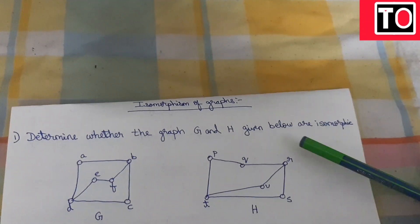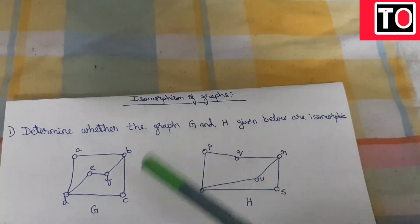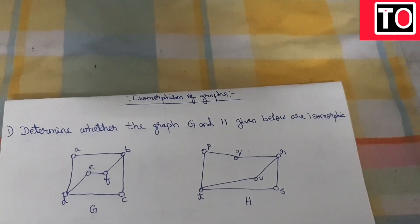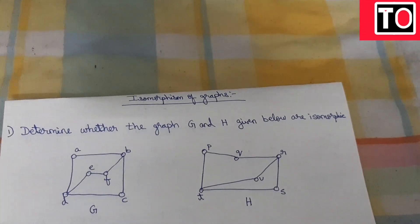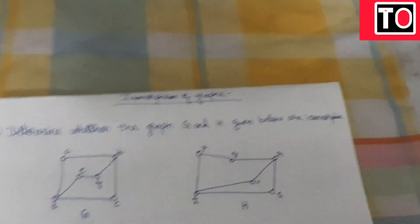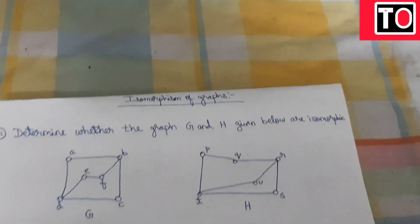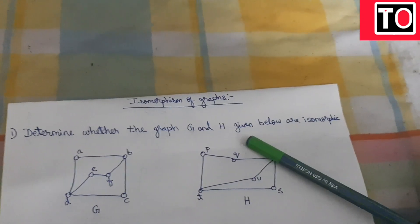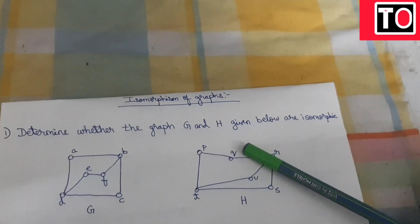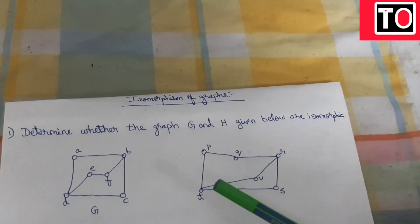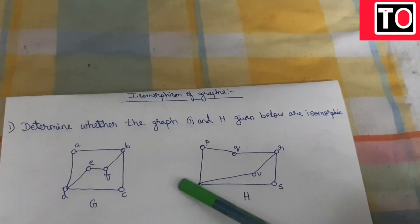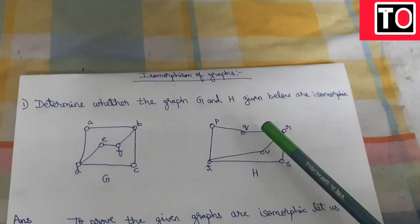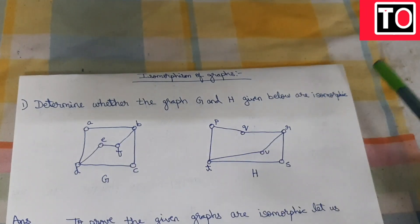We will look at two graphs and determine whether they are isomorphic or not. That is the question: determine whether the graphs given below are isomorphic. Now we will talk about how to prove this — using four steps.